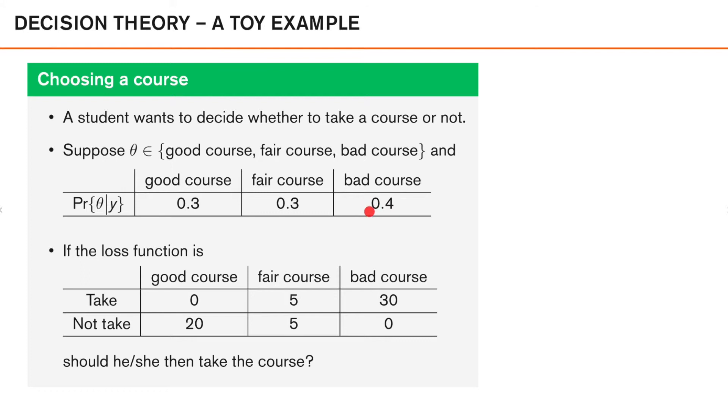So the student has also designed a loss function, saying that if he or she takes the course and it's good, there's zero loss. So this is a good thing. If he or she takes the course and it's fair, there's a loss of 5, and if the course is bad, it's a loss of 30. Similarly, there's a loss associated with not taking the course if it's good, fair, or bad.